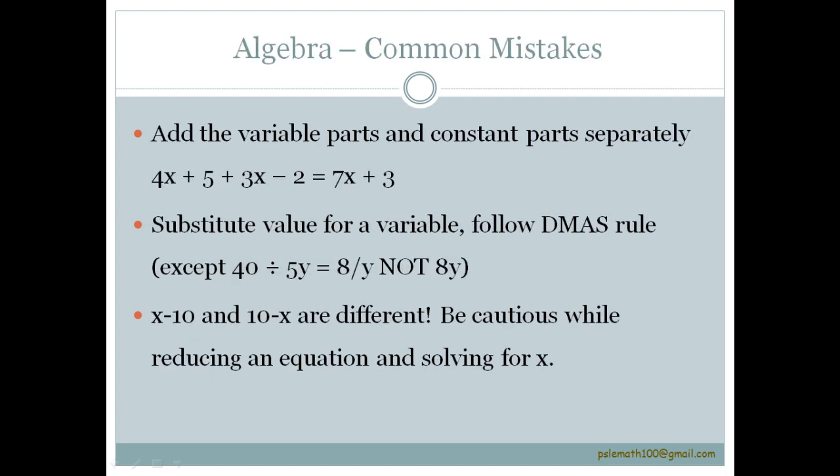Add the variable parts and the constant parts separately. For example, 4x plus 5 plus 3x minus 2 is equal to 4x plus 3x is 7x and 5 minus 2 is 3. So the answer is 7x plus 3. It does not become 10x.